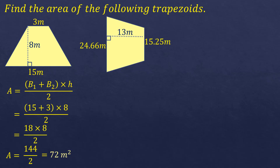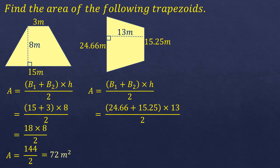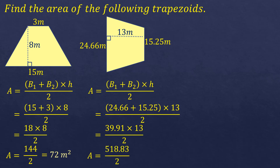Another trapezoid. Following the formula, base one is 24.66 and base two is 15.25, with a height of 13, divided by 2. The sum of 24.66 and 15.25 is 39.91, times 13 is 518.83, divided by 2 gives 259.415 square meters.